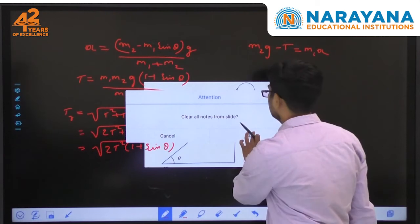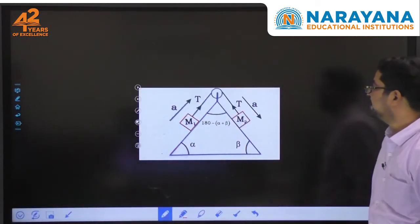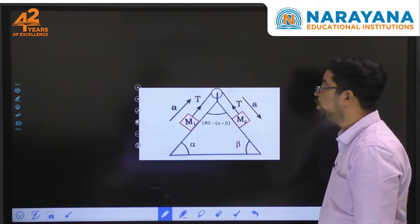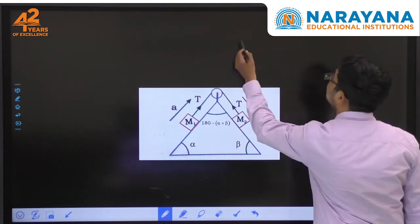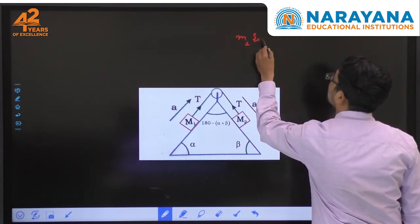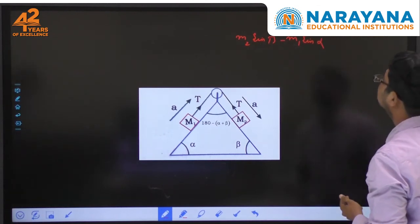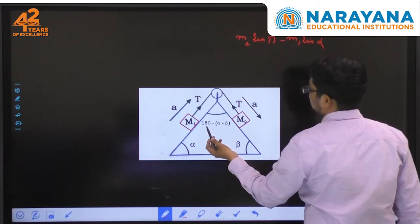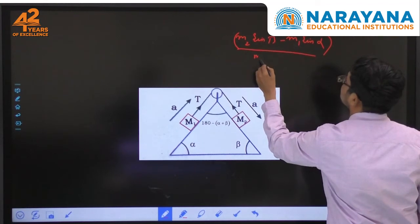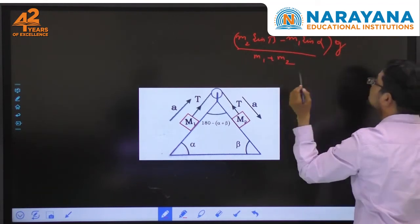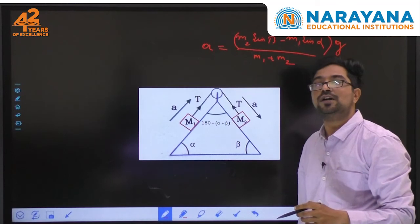Now here is one more model — a double inclined plane system. How do you find the tension and acceleration? The acceleration a equals (m2·sin β minus m1·sin α) times g, divided by (m1 plus m2).